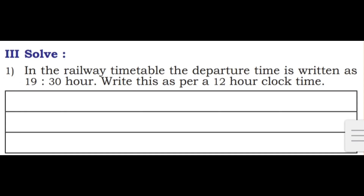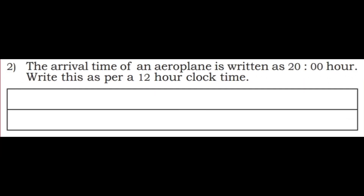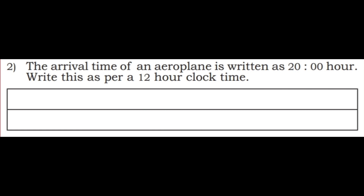Next, solve. First one: In the railway timetable the departure time is written as 19:30 hours. Write this as per 12-hour clock time. 19:30 minus 12 equals 7:30 PM. Second question: The arrival time of an aeroplane is written as 20 hours. Write this as 12-hour clock time. 20 minus 12 equals 8 hours PM. This is exercise 14.2.